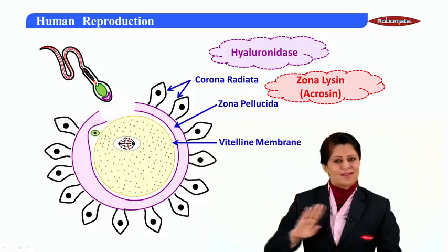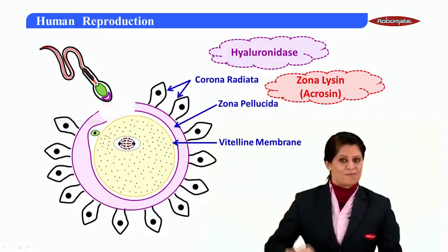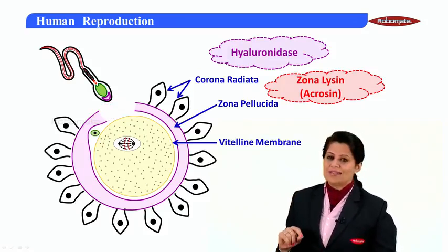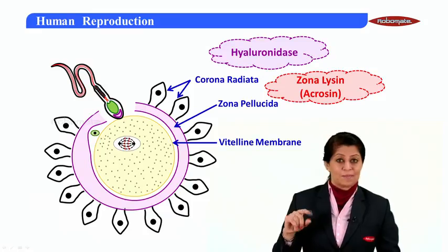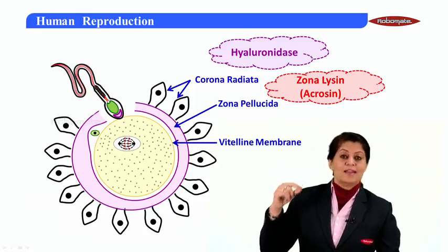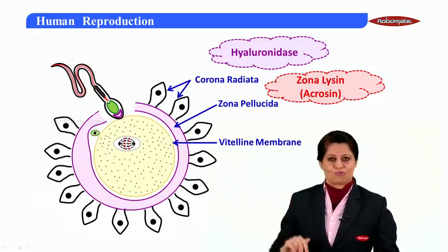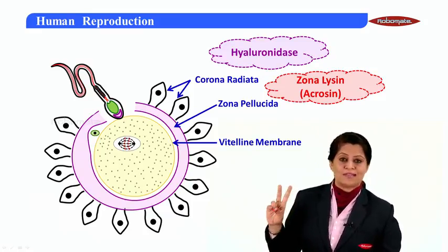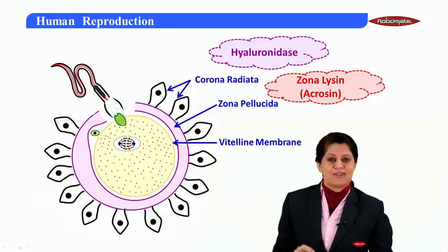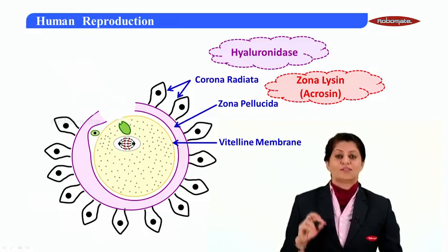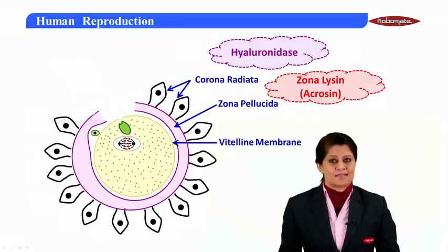So two barriers are crossed. The third is the vitelline membrane. Once the sperm head's acrosome membrane touches the vitelline membrane, they fuse together. The acrosome membrane and vitelline membrane fuse, and this releases the nucleus of the sperm inside the ooplasm.